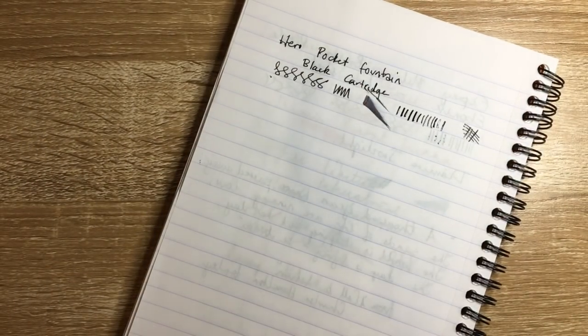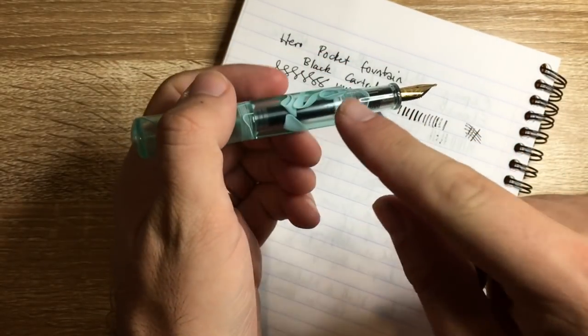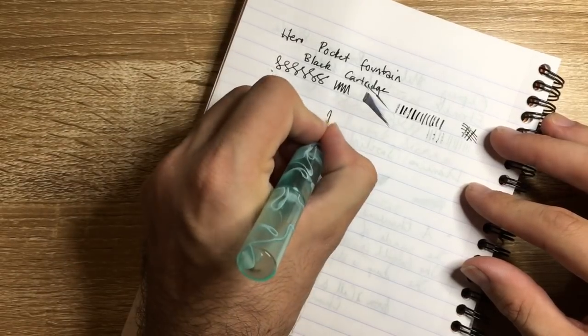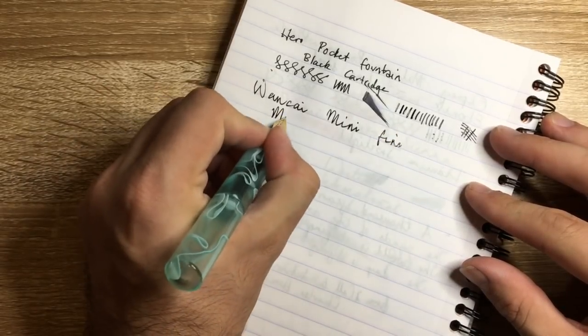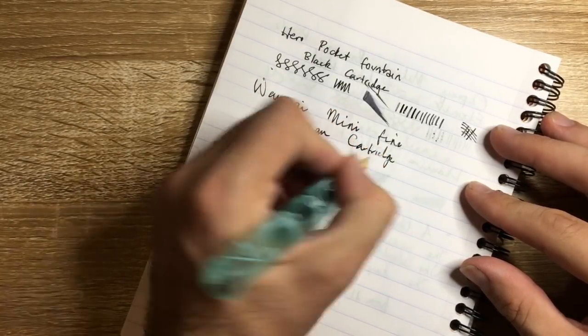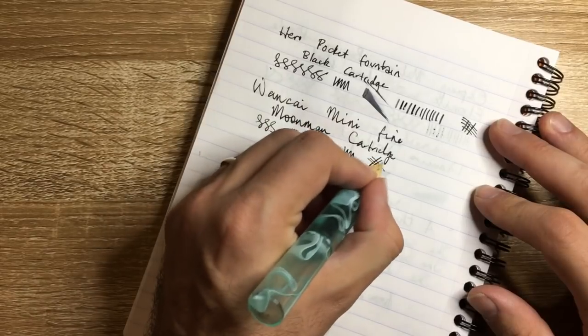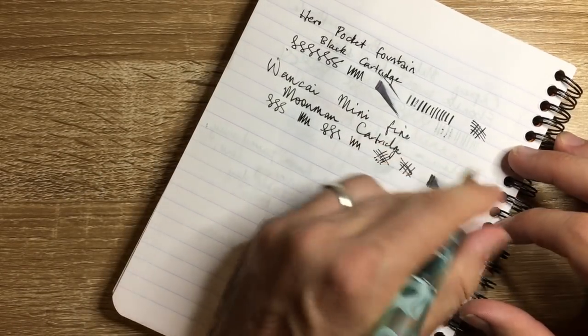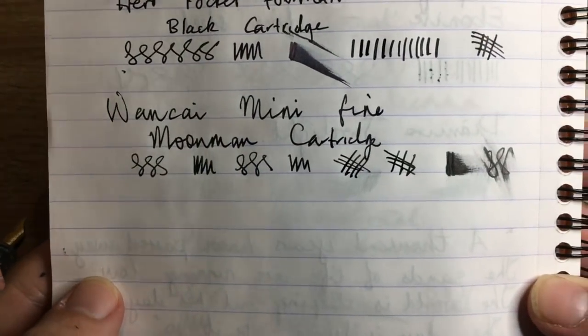Let's have a look now at the Wonkai Mini. So once again, I'll write with this posted, because that's the way it's intended. And this has the Moonman proprietary cartridge in it. So this is probably a fine nib. And it's got the Moonman cartridge. It's smooth. There's a bit of feedback on it, I have to say. But it's not unpleasant. In fact, I would go so far to almost say it's a pleasant feedback. And once again, it's absolutely wet enough. It's not the wettest ink in there. But as you can see, it does a pretty decent job.